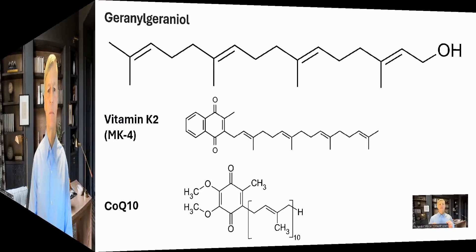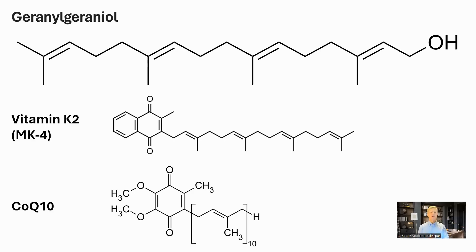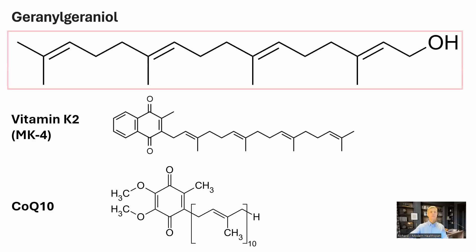The molecule is geranylgeraniol, and as with so many other molecules, it goes down with age and may be part of the reason for osteoporosis and sarcopenia. This is geranylgeraniol, which is a diterpene. The name is a bit of a mouthful, so I will stick to calling it GG from now on.